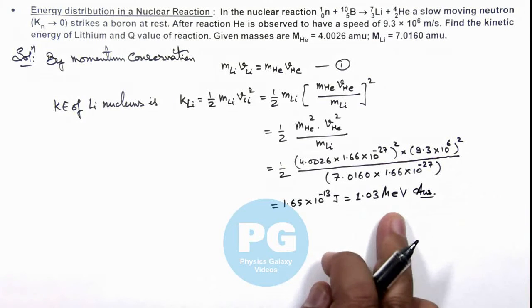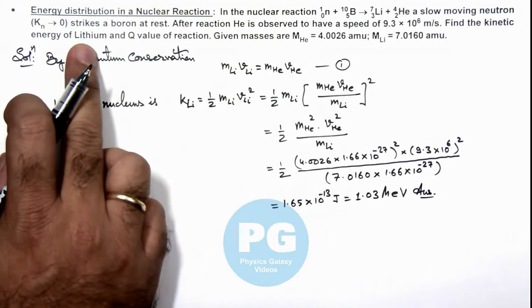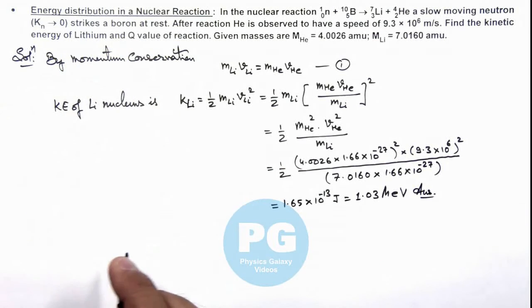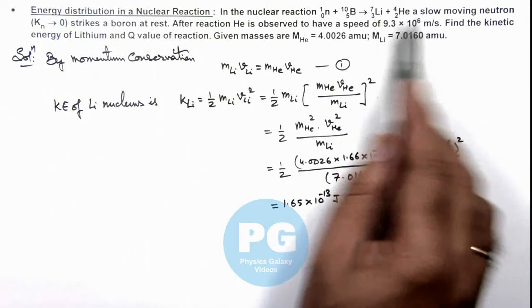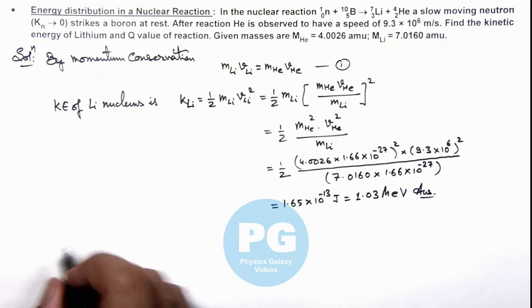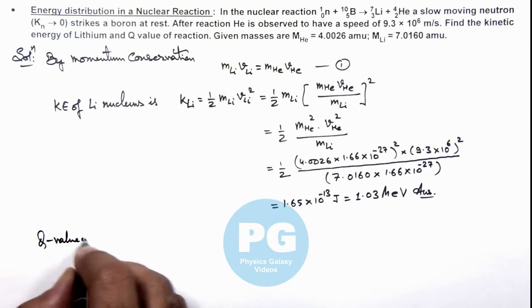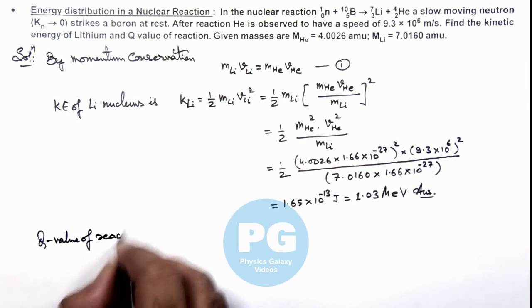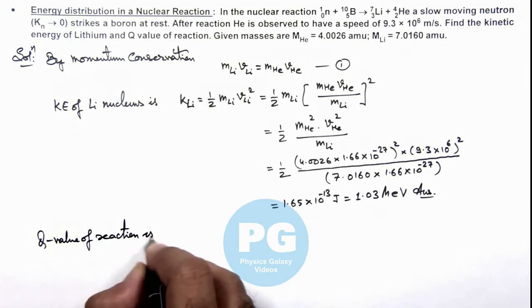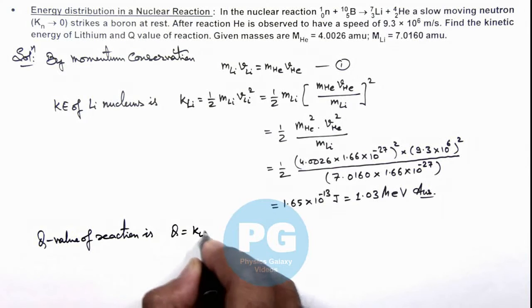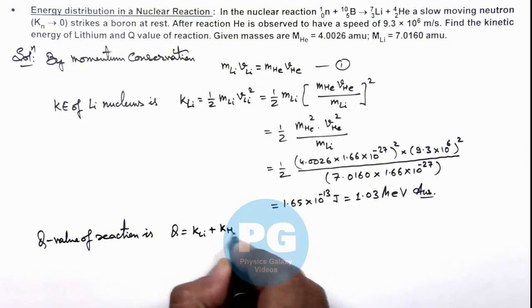We are also required to find the Q value of reaction. We know the total energy liberated is shared in all the products in form of kinetic energy. So here we can write Q value of reaction is: Q = KE_Li + KE_He.